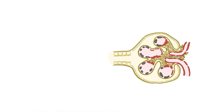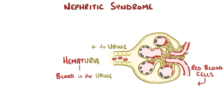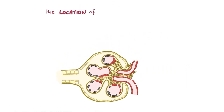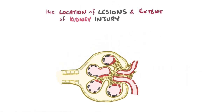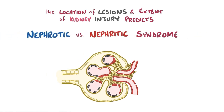In some cases, though, lupus nephritis can present as a nephritic syndrome, which means that the damage to the nephron ends up allowing red blood cells to filter into the urine, causing hematuria, or blood in the urine. The location of lesions and the extent of kidney injury often predicts whether the general presentation will be nephrotic versus nephritic syndrome, but is far from exact.